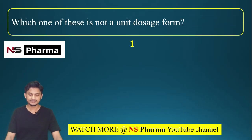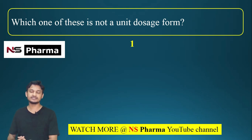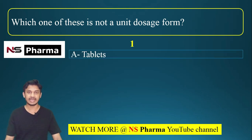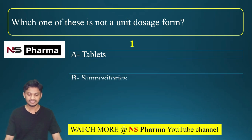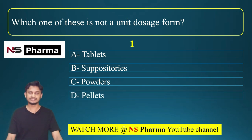First question: which one of these is not a unit dosage form? Options are: option A, tablets; option B, suppositories; option C, powders; and option D, pellets.